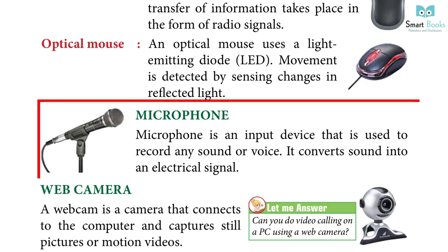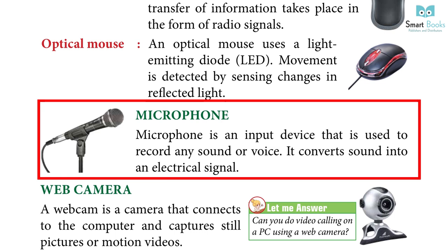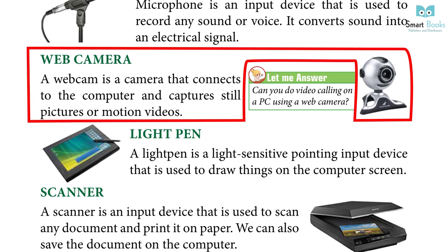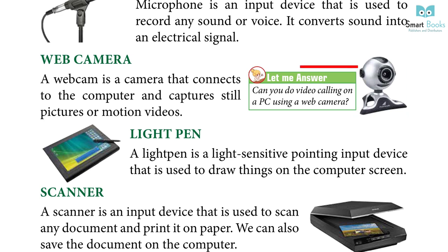Microphone is an input device used to record any sound or voice. It converts sound into an electrical signal. Web camera: A webcam is a camera that connects to the computer and captures still pictures or motion videos. Can you do video calling on a PC using a web camera?